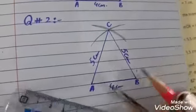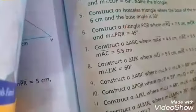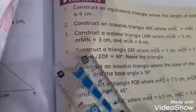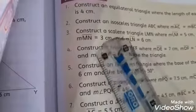In question number 3, construct a scalene triangle LMN where LM equals 5 cm, MN equals 3 cm, and LN equals 6 cm. This is a scalene triangle where all three measurements are different.